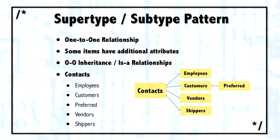Shippers would have information specific only to shippers. So we have a situation where, in one sense, they're all contacts and they share information, but in another sense they are individualized into separate subgroups. The supertype-subtype pattern solves that dilemma, allowing you to put all of the contacts together in one contact table with their common attributes, and then break out the specific attributes into separate tables for employees, customers, vendors, and shippers.